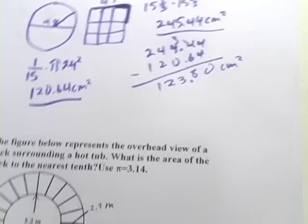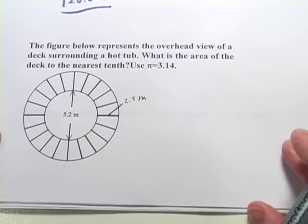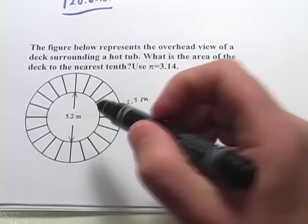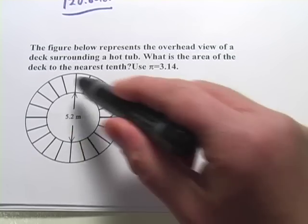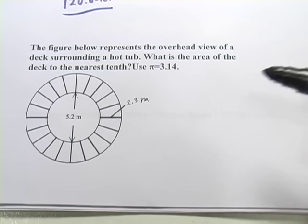Alright, let's try another one. This one's about a construction project. It says the figure below represents the overhead view of a deck surrounding a hot tub. So this part in the middle must be the hot tub and this on the outside must be the deck. What is the area of the deck to the nearest tenth?